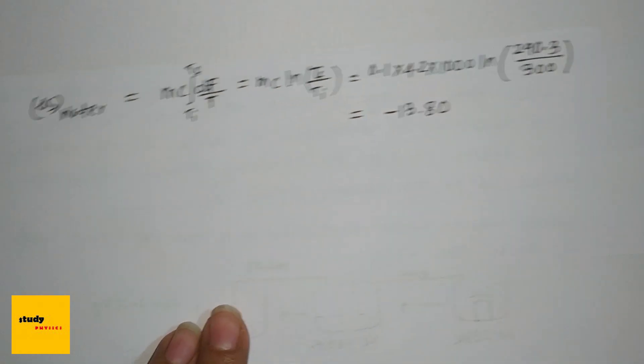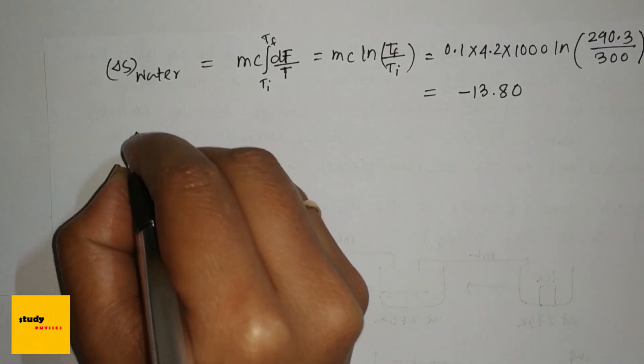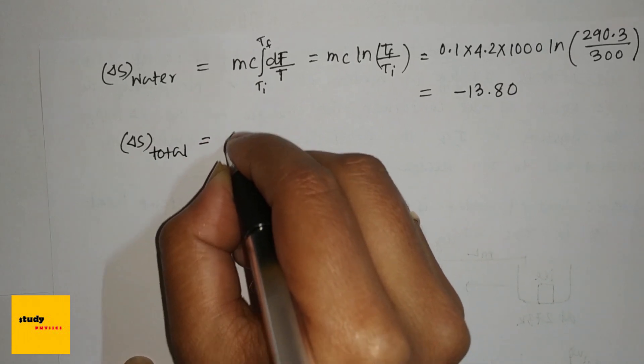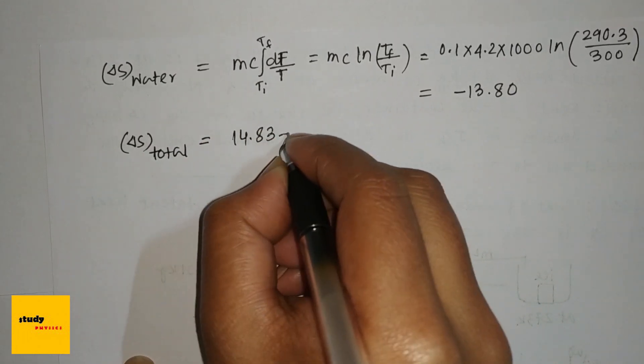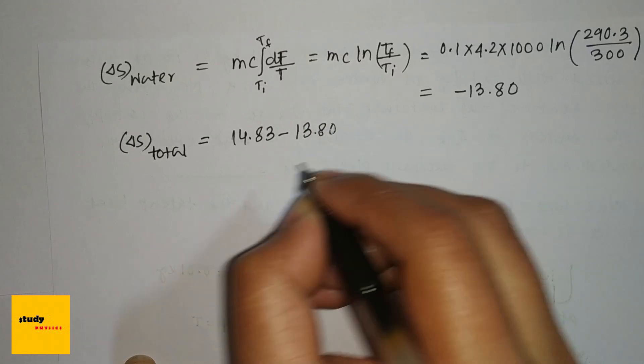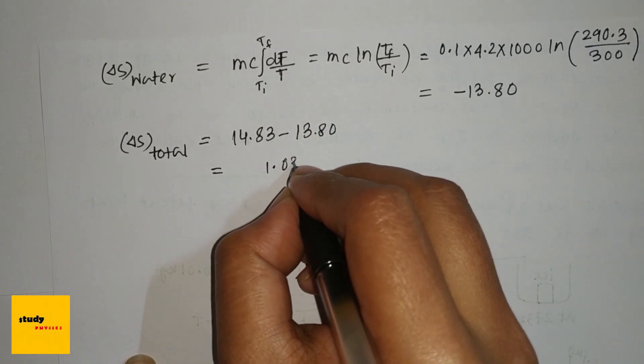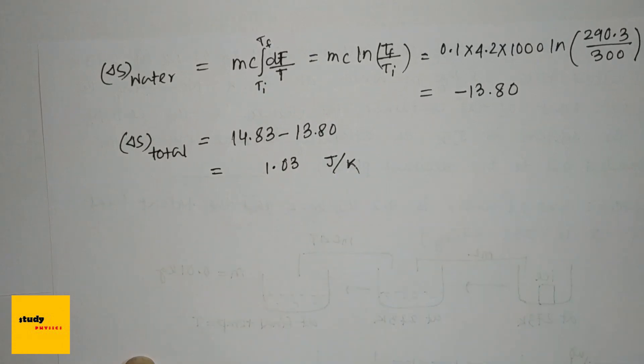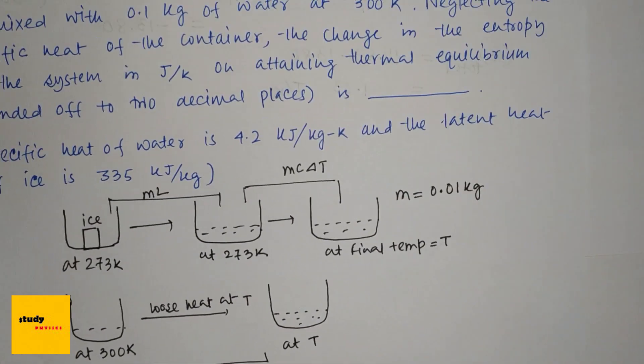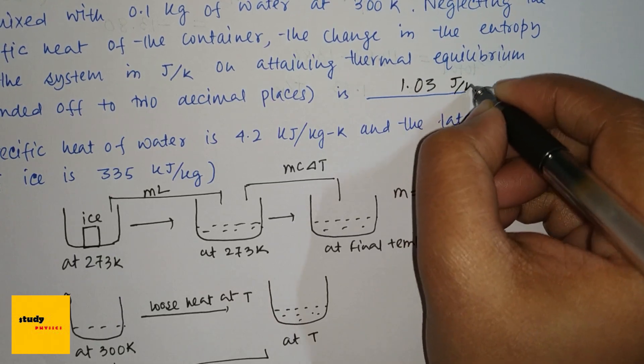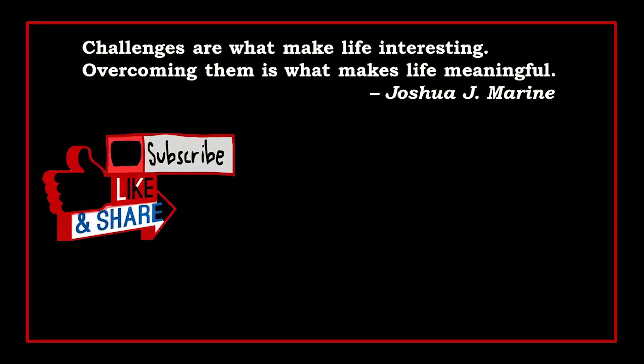So the total change in entropy is 14.83 minus 13.80, which is 1.03 joules per Kelvin. So the answer is 1.03. Thank you for watching this video. Please like, share, and subscribe.